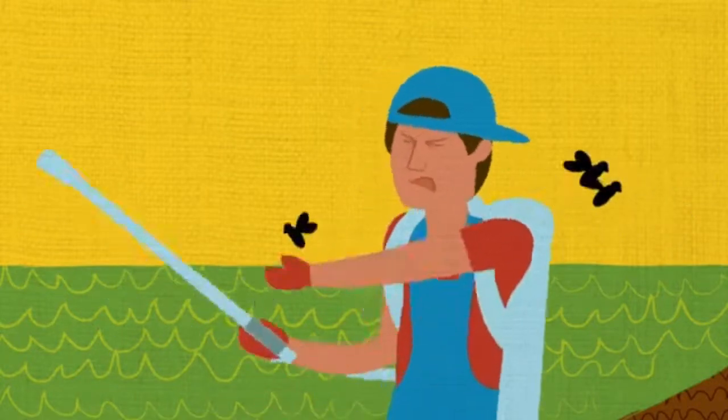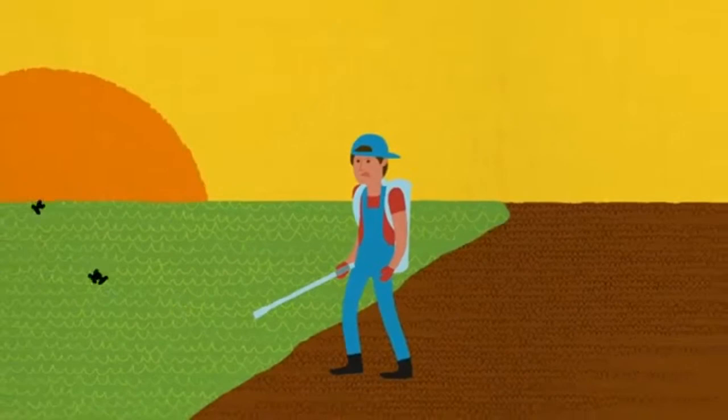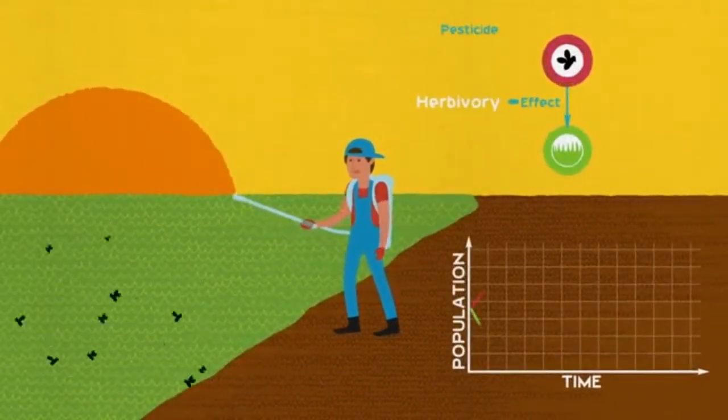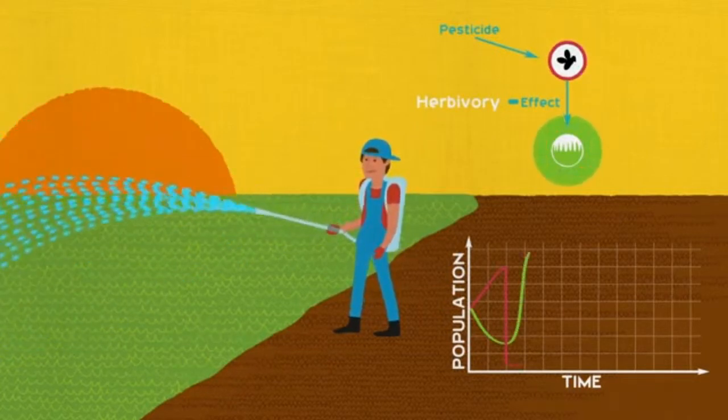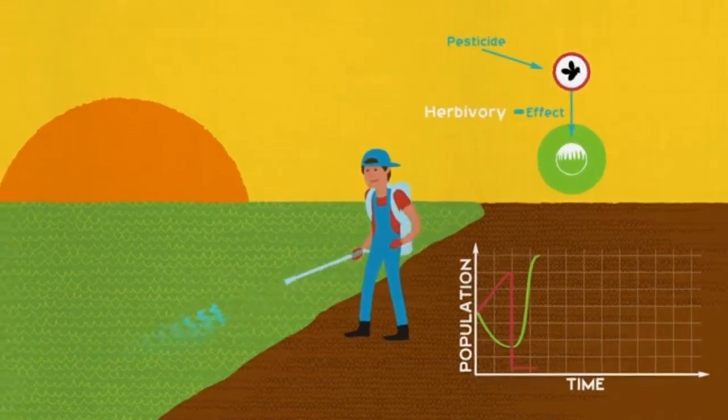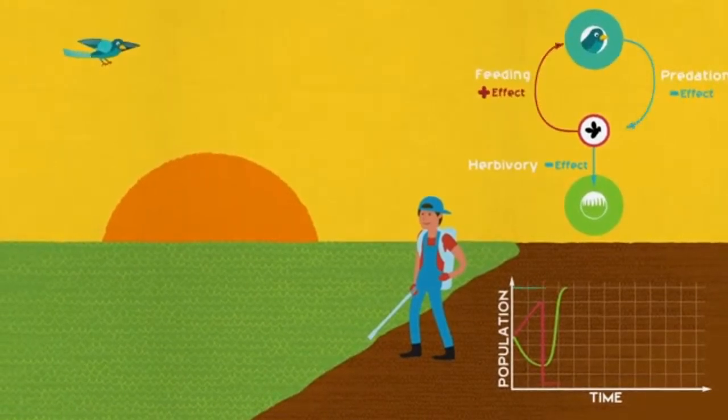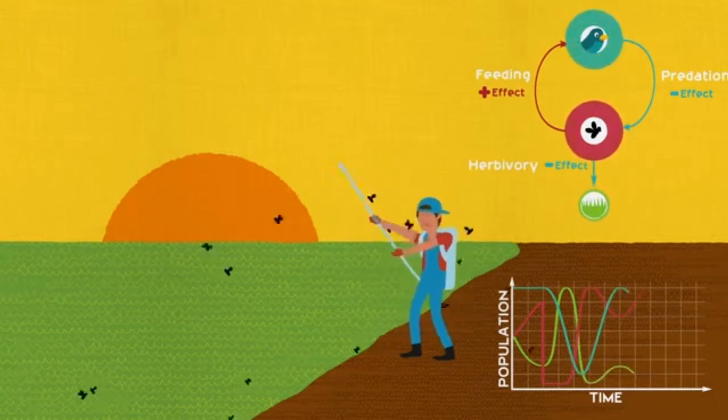Feedback processes might seem counterintuitive because many of us are used to more predictable linear scenarios of cause and effect. For instance, it seems simple enough that spraying pesticides would help plants grow by killing pest insects, but it may trigger a host of other unexpected reactions. If spraying pushes down the insect population, its predators will have less food. As their population dips, the reduced predation would allow the insect population to rise, counteracting the effects of our pesticides.